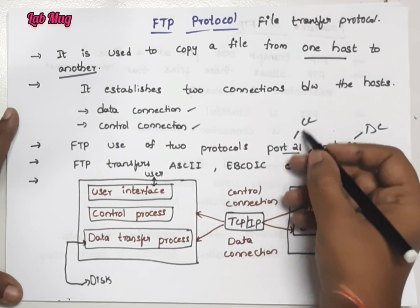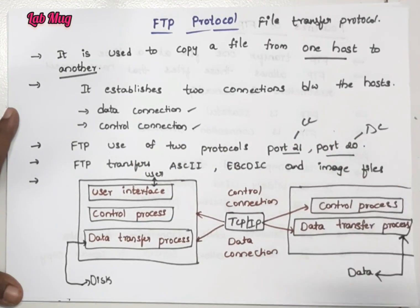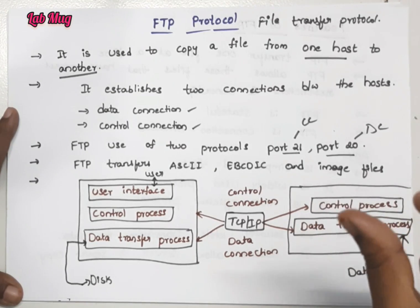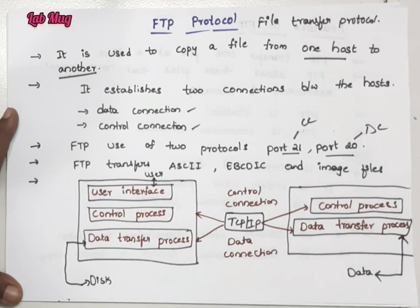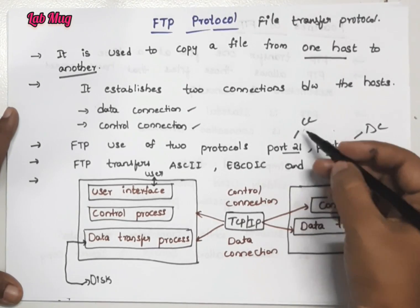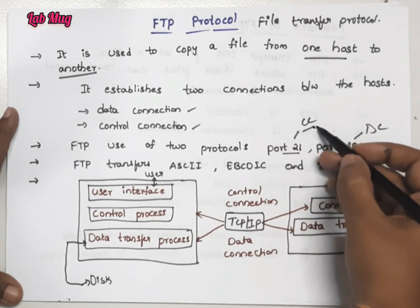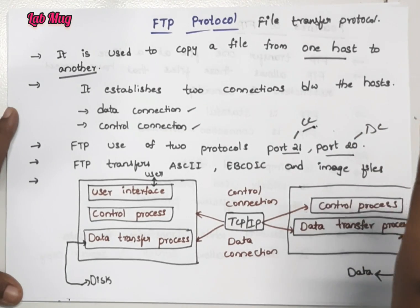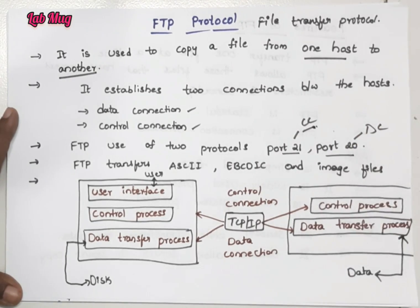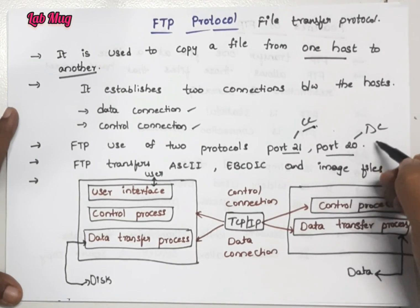What is control connection? First of all, when you transfer a file from sender to receiver, the command sent is the FTP command - that is, the password command. The response to that command is handled based on the control process, that is, the control connection. The control connection handles commands from sender and their responses.